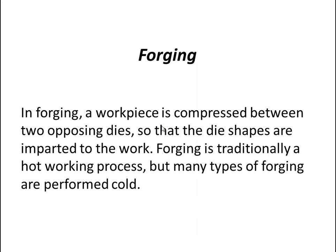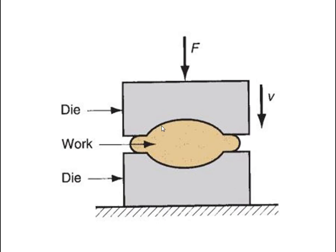The second process is forging. In forging, a work piece is compressed between two opposing dies so that the die shapes are imparted to the work. Forging is traditionally a hot working process, but many types of forging are performed cold. In the diagram, the upper die applies a downward force while the lower die is fixed. As the force is applied, the shape of the work piece changes and its area increases.